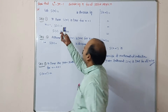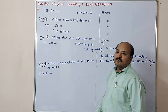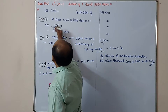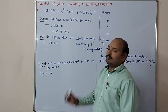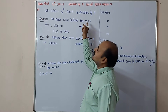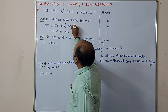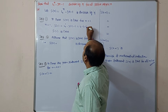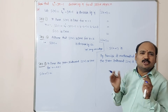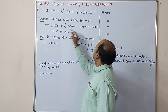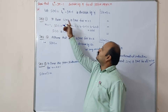Next question: Show that 4 power n minus 3n minus 1 is divisible by 9 for all positive indices n. Let S of n equal to: 4 power n minus 3n minus 1 is divisible by 9. In Step 1, to prove S of n is true for n is equal to 1: substituting n equals 1 gives 4 power 1 minus 3 into 1 minus 1, which is 4 minus 3 minus 1 equals 0. Zero is a multiple of 9 (0 = 0 × 9), so it is divisible by 9. Therefore S of 1 is true.